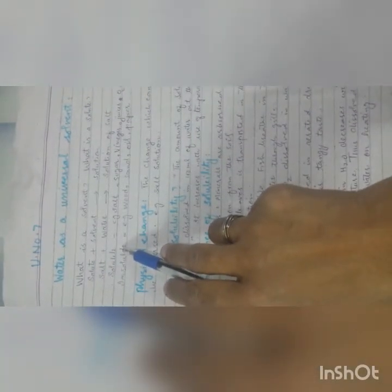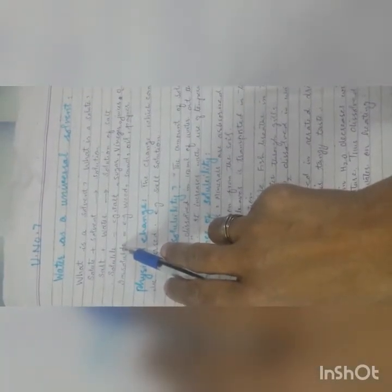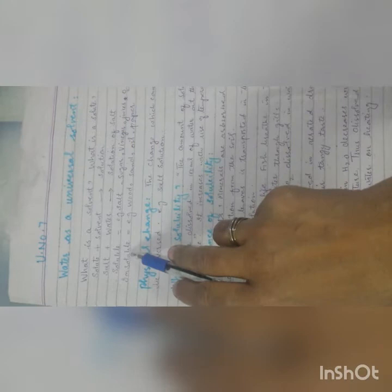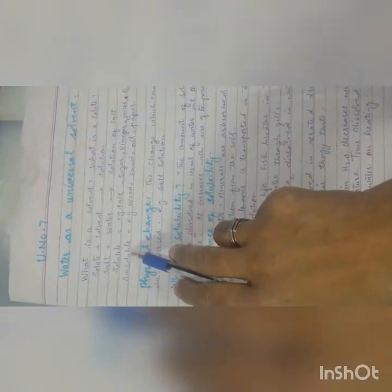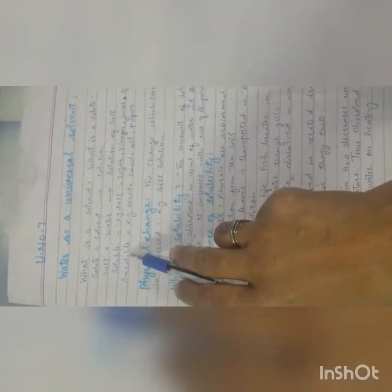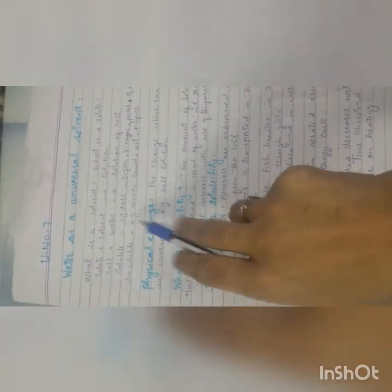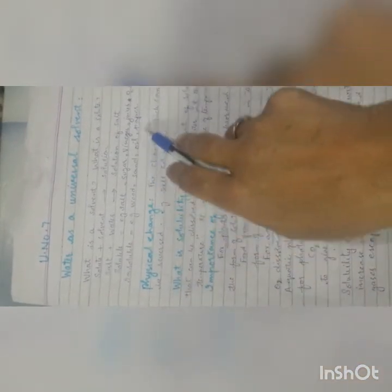Those substances which dissolve in water, we call them soluble in water. For example, salt, sugar, vinegar, juices, oxygen gas, and carbon dioxide gas—all are soluble in water. They are called water-soluble substances. But the substances which are not soluble in water are called insoluble. For example, wood, sand, oil, and paper—all are called insoluble materials.